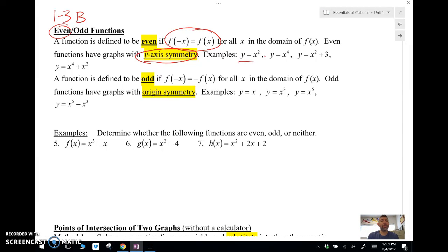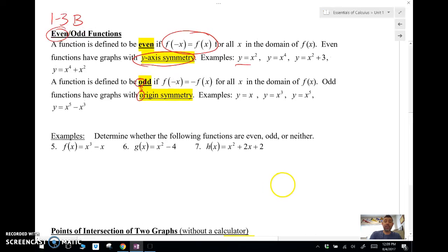An odd function is something that is symmetric about the origin. But check this out: odd, origin—look, they start with the same letter. Now you can remember which symmetry goes with which. Odd is origin symmetry, so we would use the same technique that we did in the previous video for finding origin symmetry. A lot of times these functions have odd powers or odd degrees: y equals x, y equals x cubed, x to the fifth, and so forth.